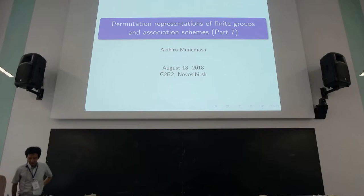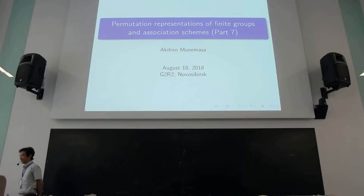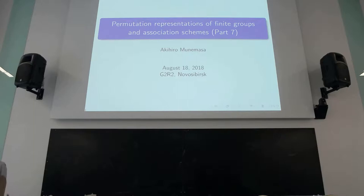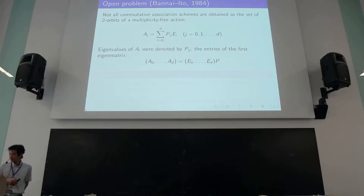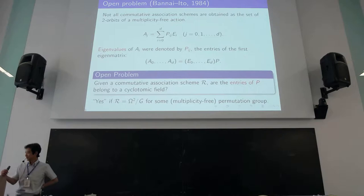This is part eight of my lecture. It's not really the final lecture because I have a program session tonight, but the material for the program is not directly related to this final lecture. The final lecture is devoted to my old paper published in 1991. And whether the eigenvalues of the adjacency matrices in the commutative algebra belong to the cyclotomic field — and it is yes for the group case.